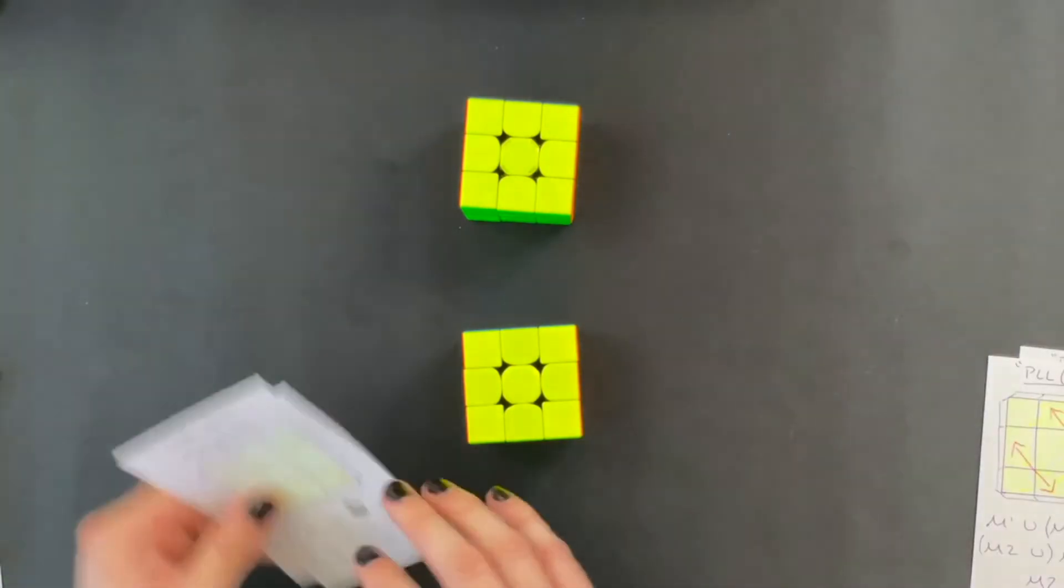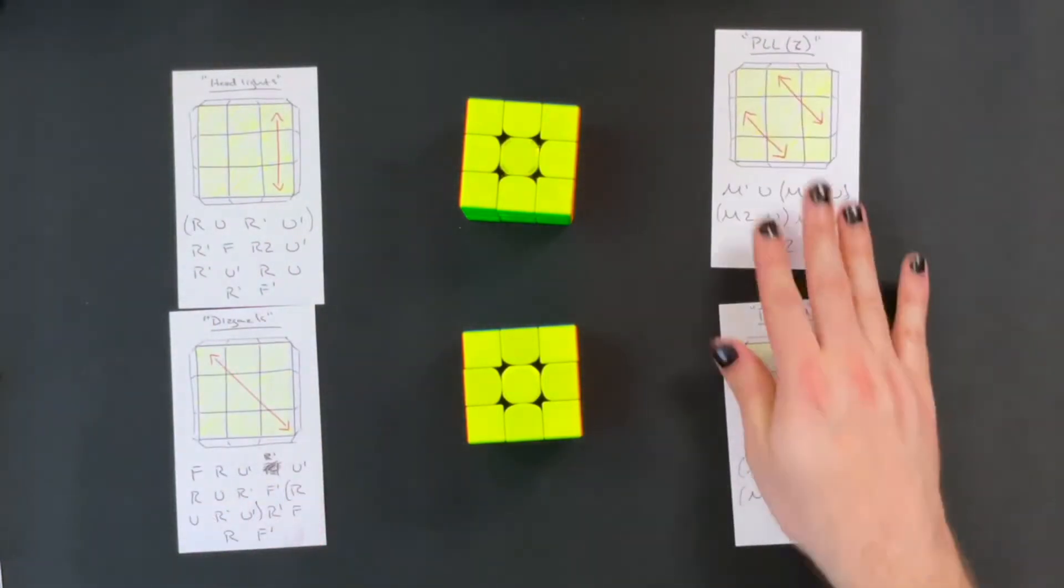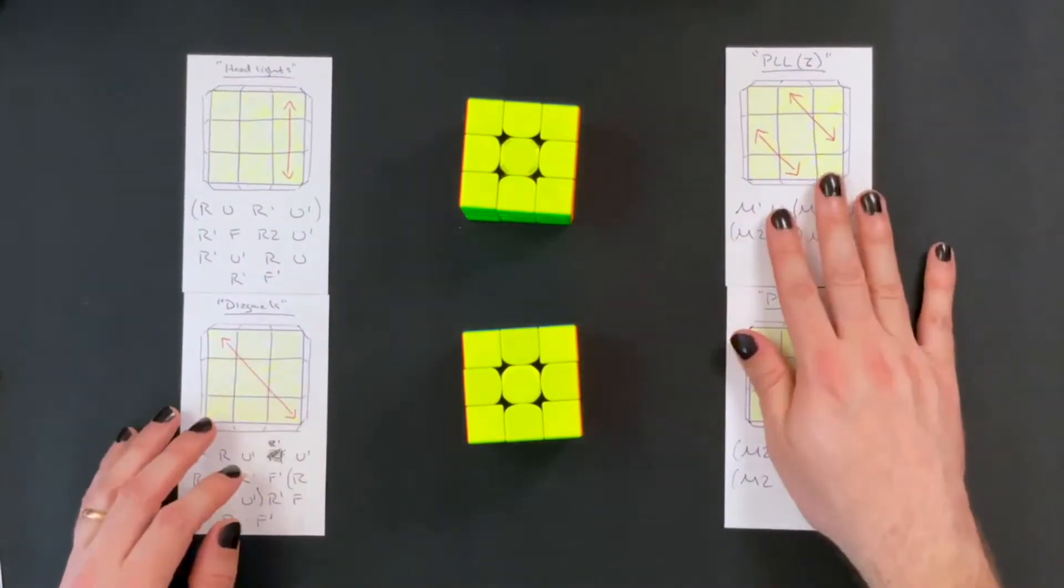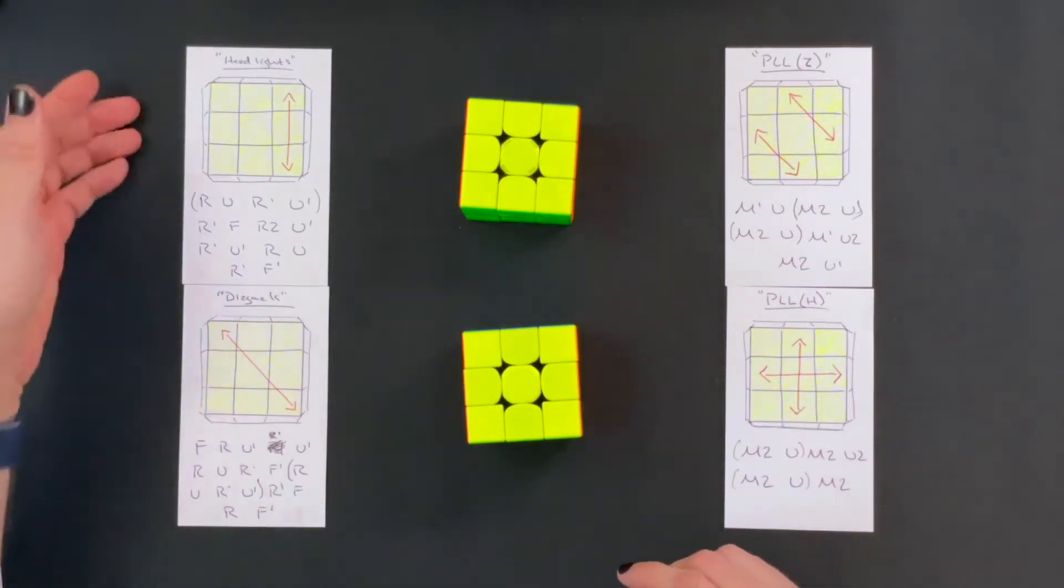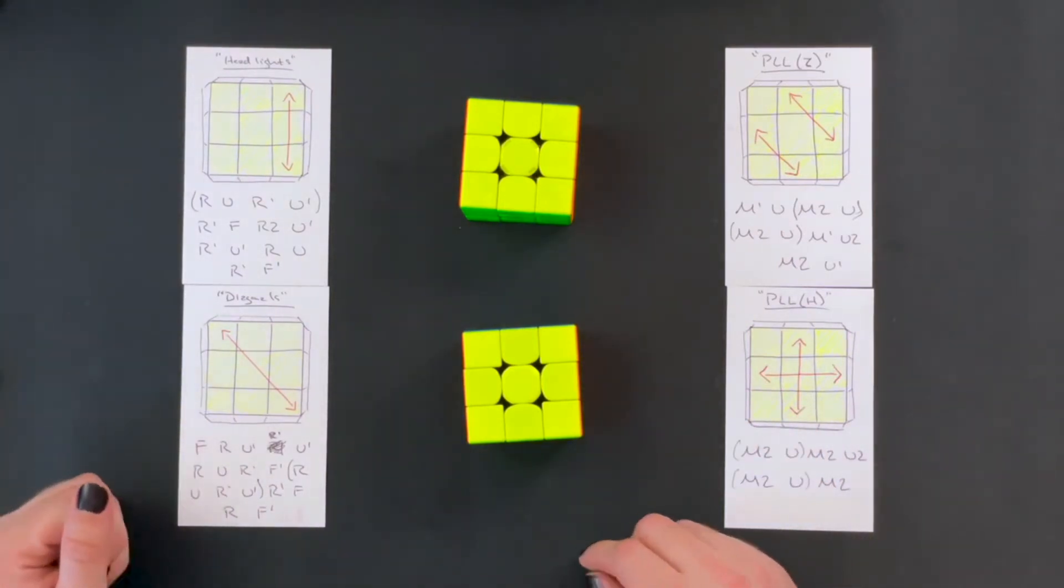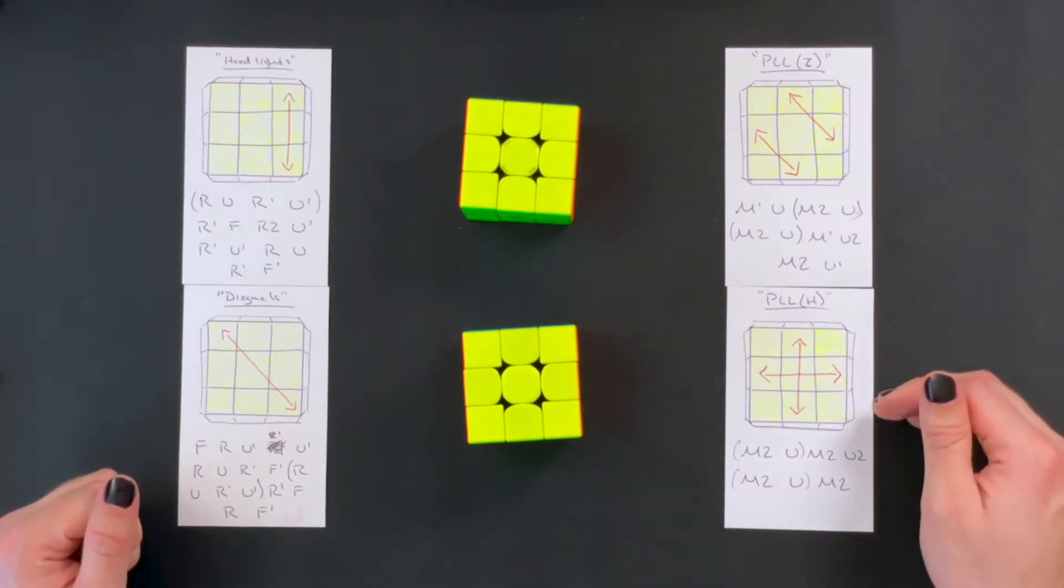For the PLL steps I broke this out into the two halves. So coming out of the OLL algorithms you're either going to have headlights or a diagonal situation and solving that leads to either the Z or H or the U for the last step of the PLL.